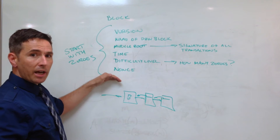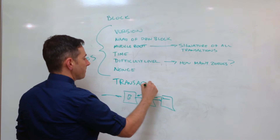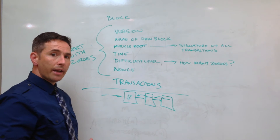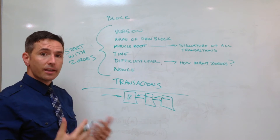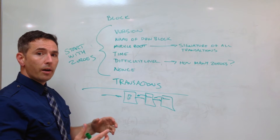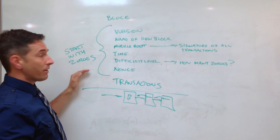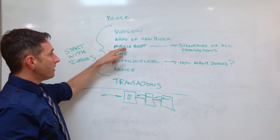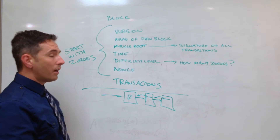In addition to the block header, we also have all the transactions below it. So what we should be able to do is go online and look at a given block and verify, just like the algorithm does, that when you take all these elements together and do a hash of them you get something that starts with a whole bunch of zeros - indicating this is a valid block.